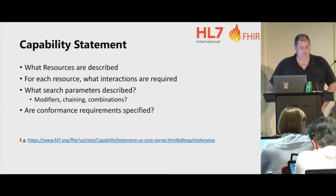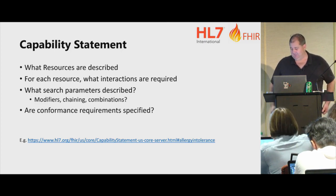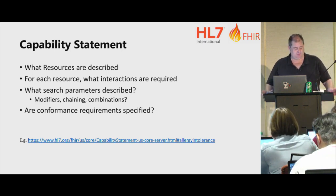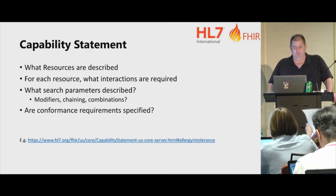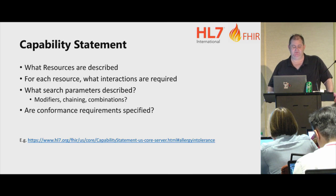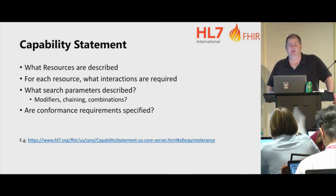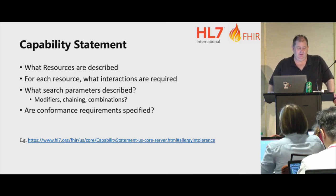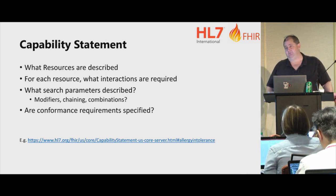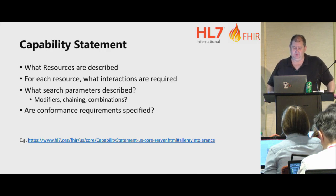So for me now I'm at the capability statement level, assuming we're talking with a RESTful API. Work through the capability statement: what resources does it describe? For each resource, what interactions are required for the server to support? If it does search, which it probably does, what search parameters are described?